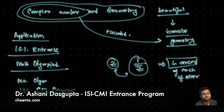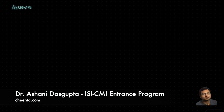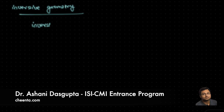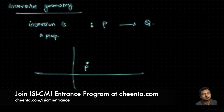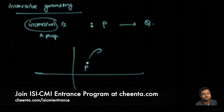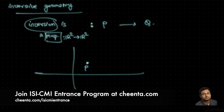What does that mean? Here is a quick primer on inversive geometry. Inversion is a map that sends a point P to a point Q. You have the plane, you have a point P, and inversion will tell you where to send this point P — what is the image of this point P. Every point in the plane is mapped somewhere, that's why we call it a map. It's a map from R² to R², but not the entirety of R² — it's actually R² minus the origin.